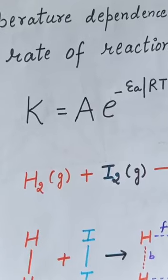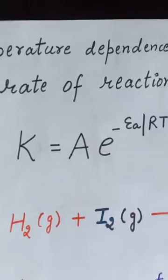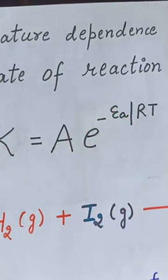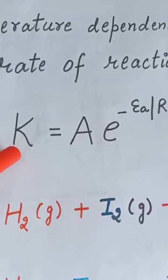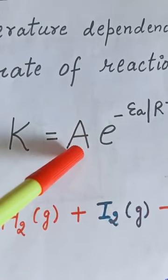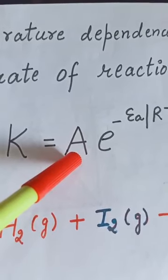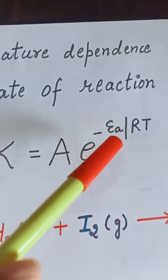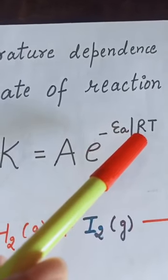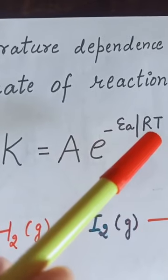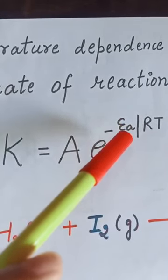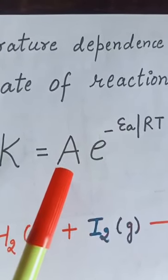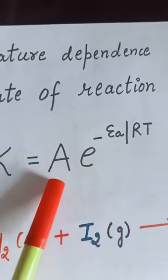The temperature dependence of the rate of chemical reaction can be accurately explained by the Arrhenius equation: K = A·e^(−Ea/RT), where K is the rate constant, A is known as the pre-exponential factor, collision frequency factor, or Arrhenius factor, Ea is activation energy, R is the gas constant, and T is temperature. Ea is measured in joules per mol and the Arrhenius constant is specific to a reaction.